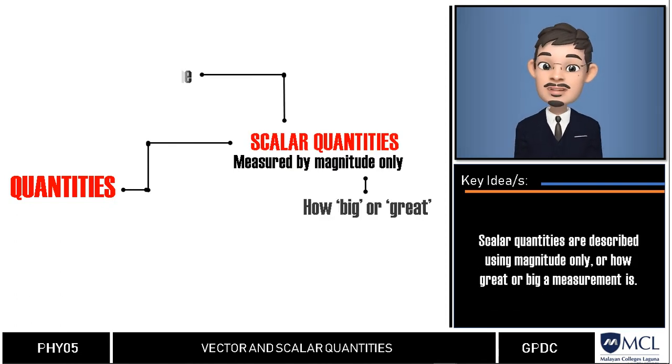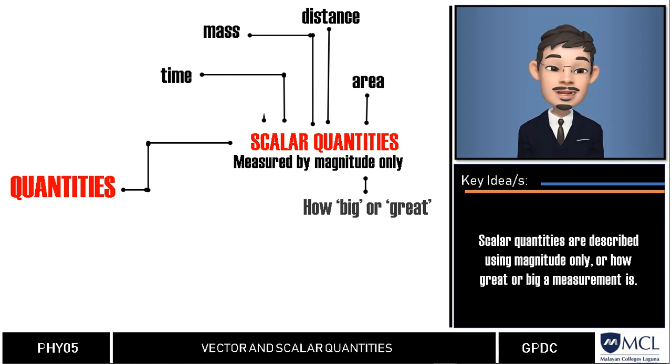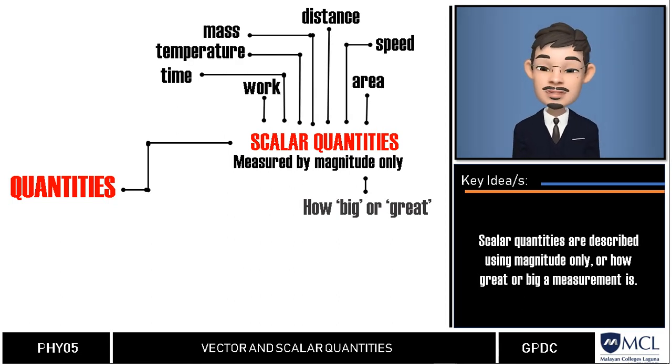Examples of these quantities are time, distance, mass, area, density, work, temperature, speed, among others.